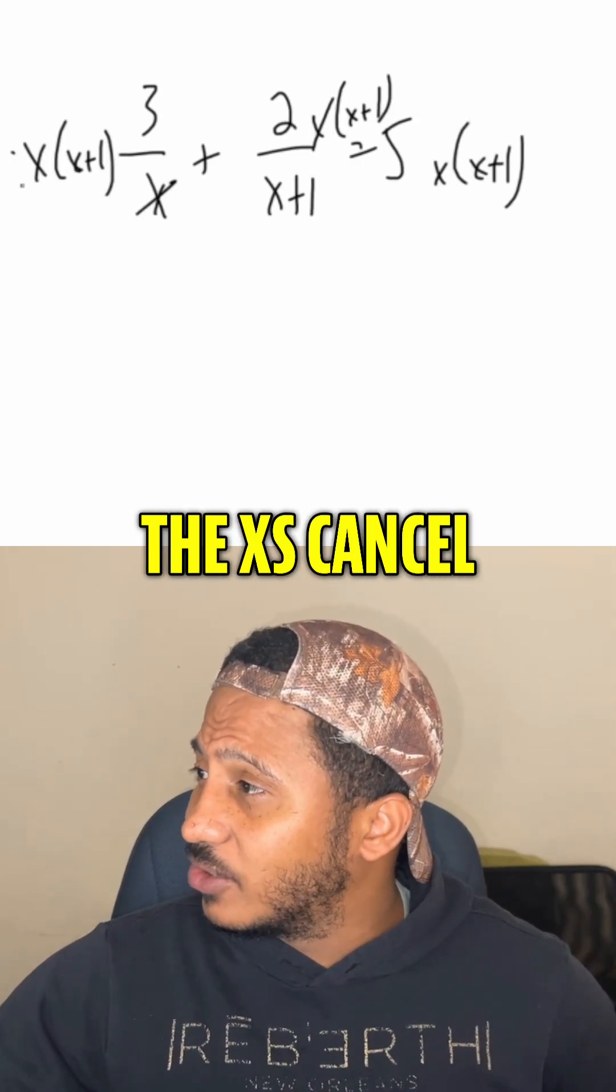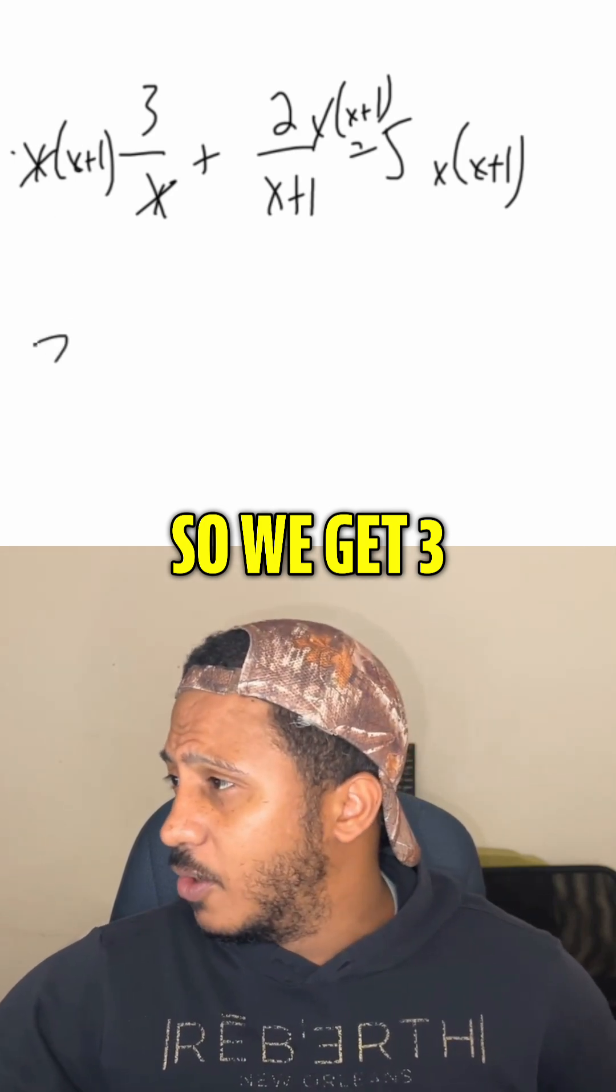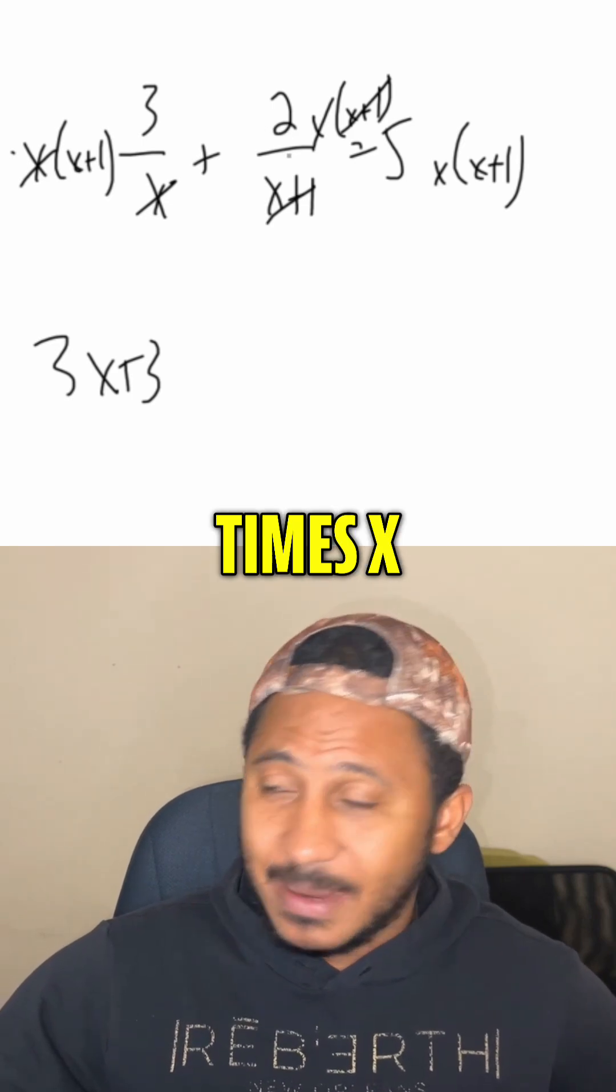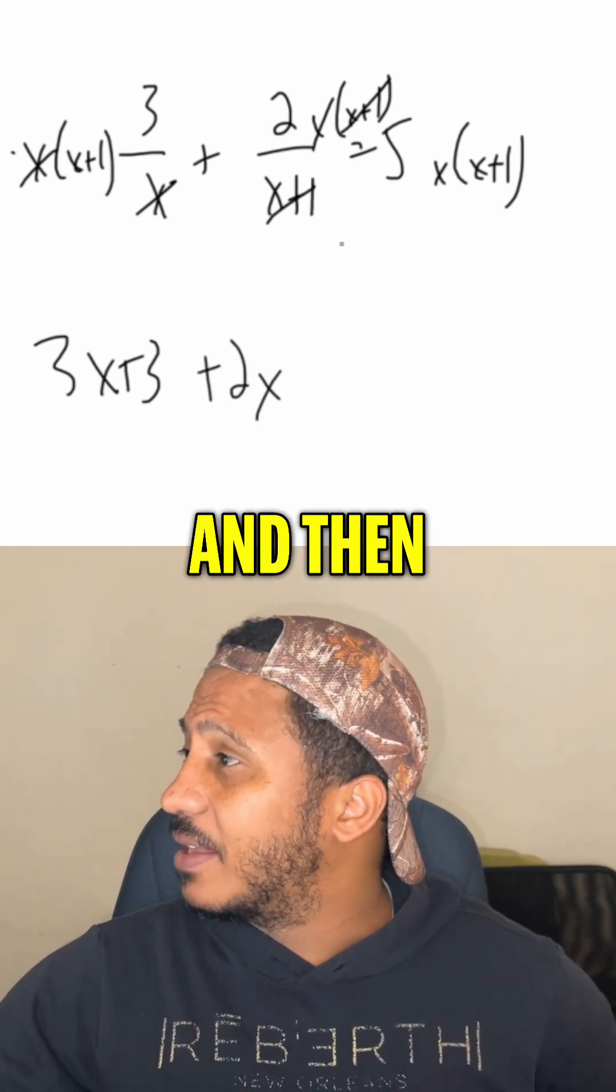Here in the first one, the x is canceled. So we get 3 times x plus 1, which is 3x plus 3. Here, the x plus 1 is canceled. So we get 2 times x, which is 2x.